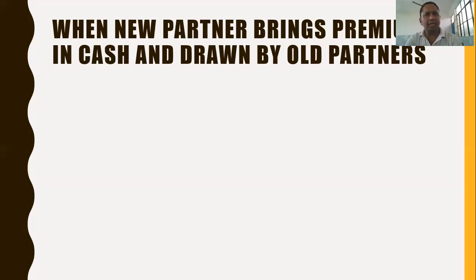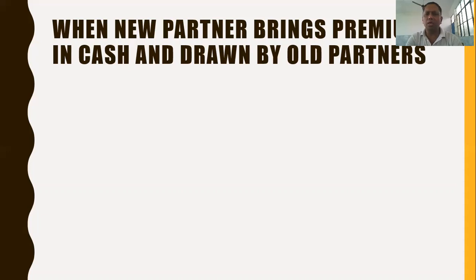The third entry arises when the goodwill brought in cash is subsequently withdrawn by the old partners. So the entry is: Old Partners' Capital Account debited to Cash Account. These are the entries passed in this case when a new partner brings premium in cash and it is withdrawn in cash by the old partners.